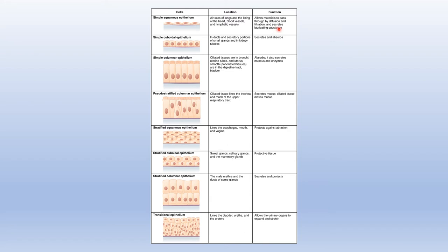Transitional epithelial is another special case. It lines your urinary bladder. When the bladder is empty, it looks multi-layered and the surface cells appear almost cuboidal in shape. However, as the bladder fills and stretches, the cells of the transitional epithelium flatten out to allow more surface area, which is what allows the bladder to stretch and hold more volume. So the appearance depends on whether the bladder is empty or full — they transition from one shape to another.